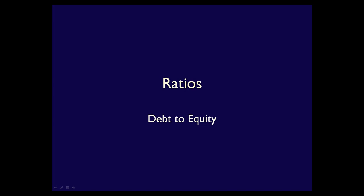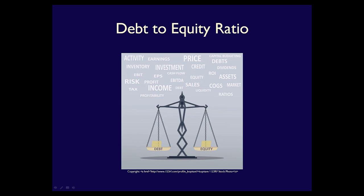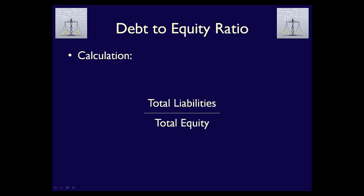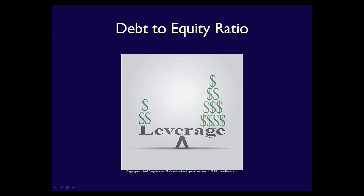Hi, Els here, and today we're going to talk about the debt-to-equity ratio. This ratio is calculated as a business's total liabilities divided by the total equity. It is used to measure the relationship between what has been contributed by the creditors in the form of debt and what has been contributed by the shareholders in the form of equity.